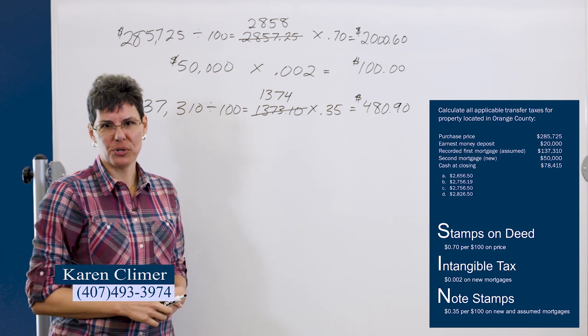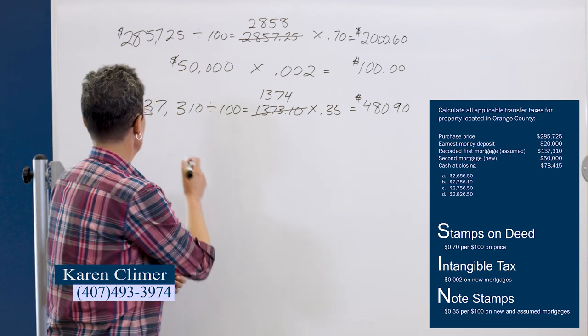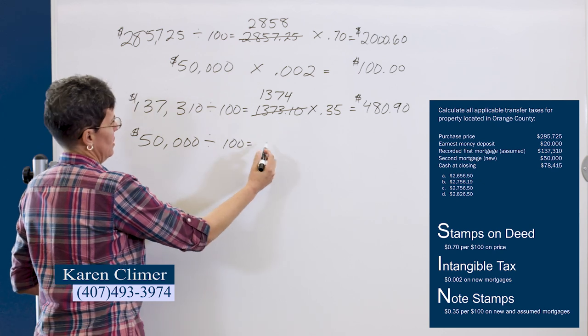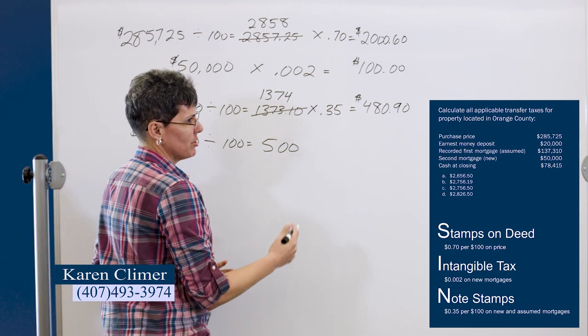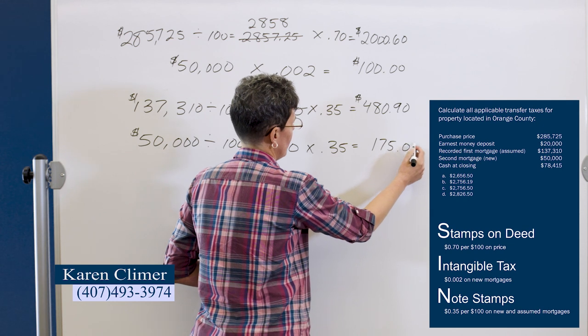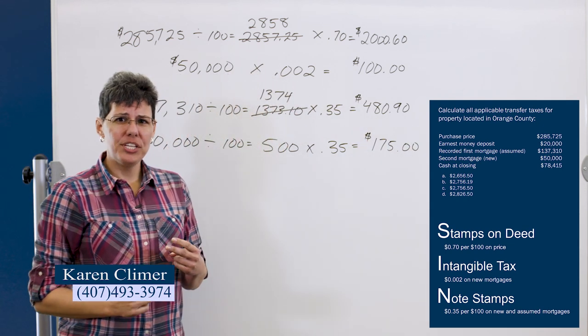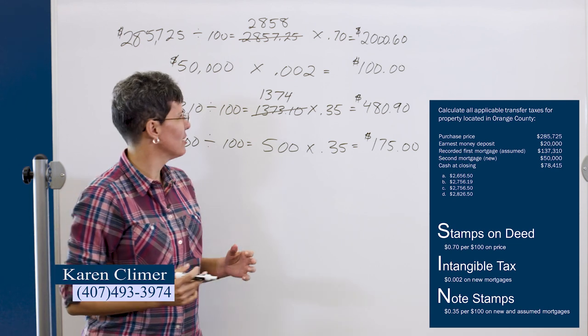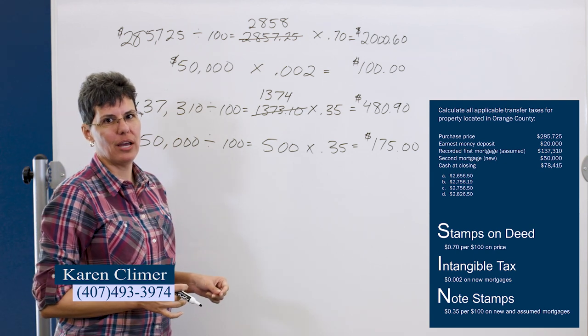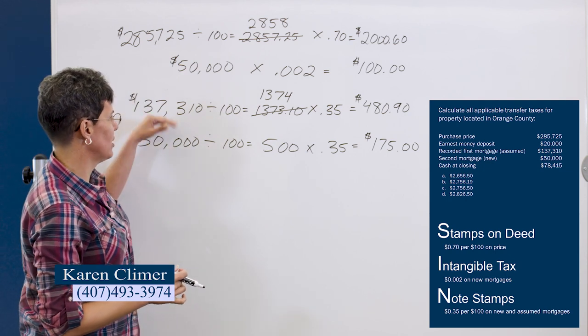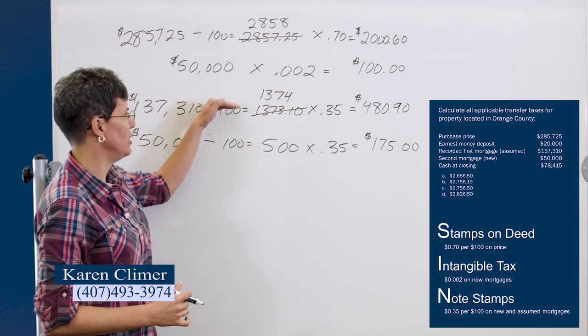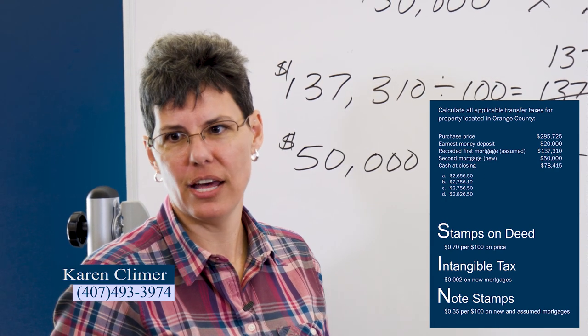That's the recorded first mortgage. We also have to pay this on the new second mortgage. So we're going to do 50,000 divided by 100 gives you 500 stamps. And they're 35 cents each. So that's going to give us $175. This question has two mortgages. And you might think, well, why don't I just add these up and do them together? In this particular problem, that would work. But if this number had been a little bit different, and we had to round both numbers up, you might be one stamp off. So it's better to just do each one separately. Takes a little more time, but it's not enough time to matter.